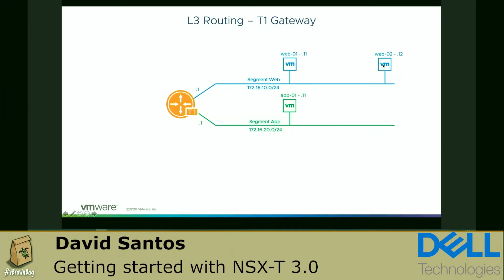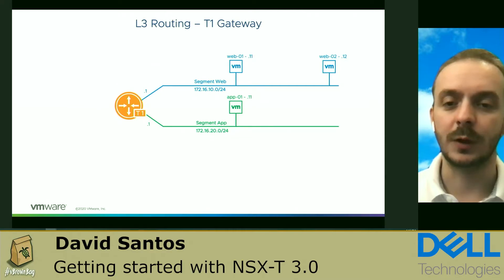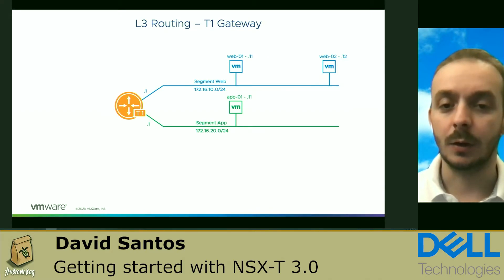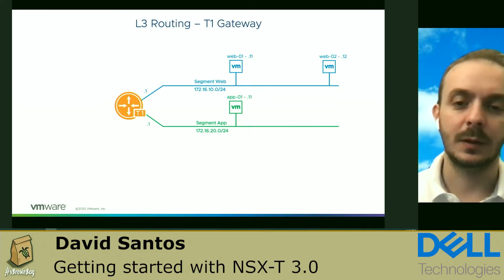The next step is routing — the communication between workloads connected in different subnets. To do that, we're going to use an object called T1 gateway or T1 router, which will be the default gateway for each one of the segments created in NSX. T1 gateways are kernel-based, distributed routers that work at the hypervisor layer. This way, we have the same IP address for routing across all hypervisors that are part of the NSX domain.